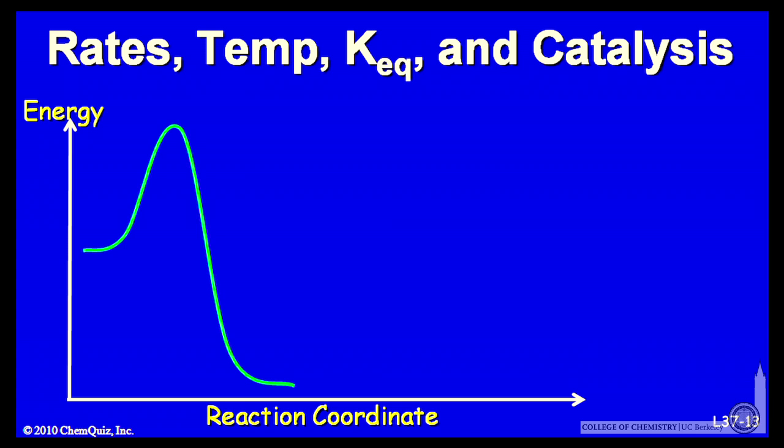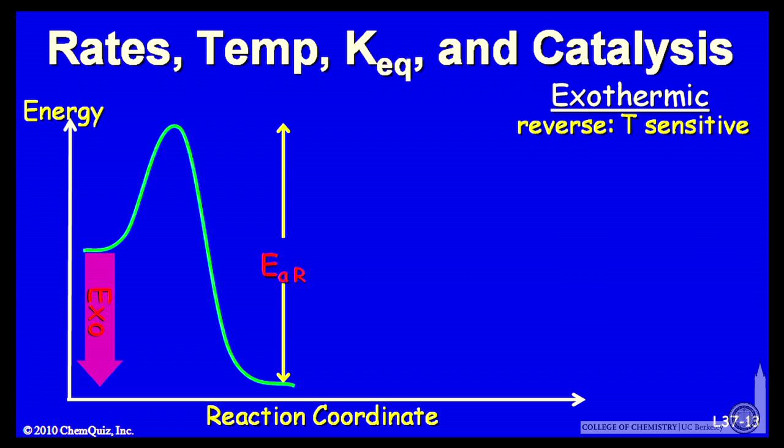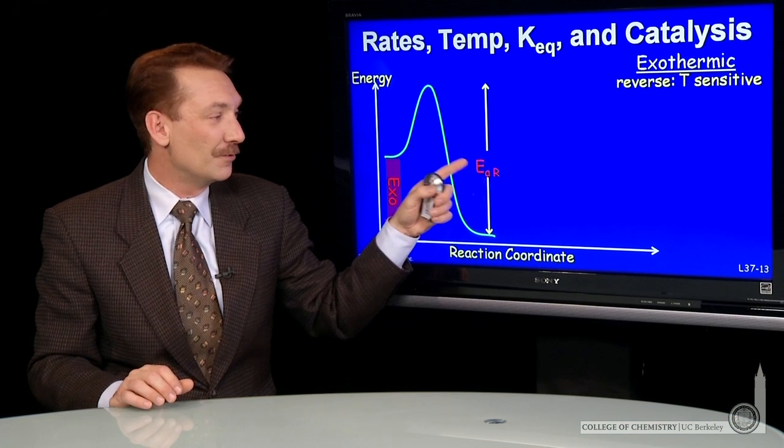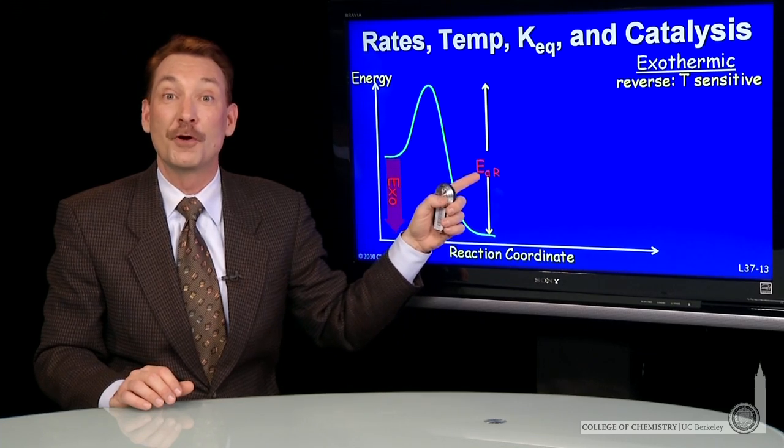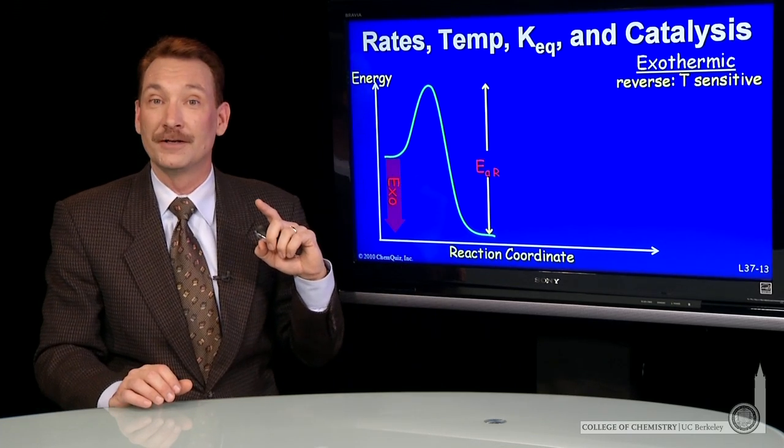So let's do that. For a typical chemical reaction that's exothermic, where the reactants are higher in energy than the products, what we find is that the reverse activation energy is greater than the forward activation energy. That means the reverse reaction for an exothermic chemical reaction is more temperature sensitive. This rate will react to a temperature change more dramatically than the forward rate.